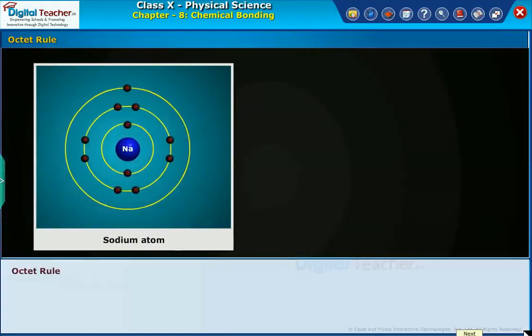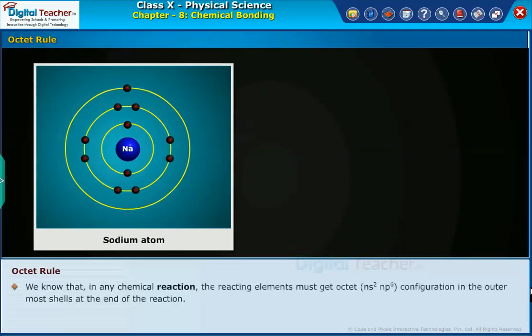Now, let us learn about the Octet Rule in detail. We know that in any chemical reaction, the reacting elements must get octet configuration, that is ns² np⁶ in the outermost shells at the end of the reaction.